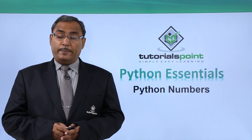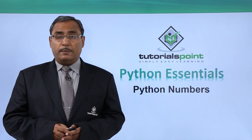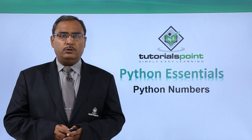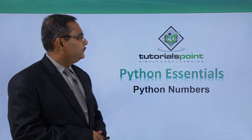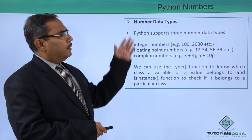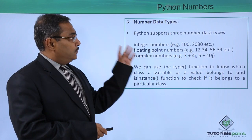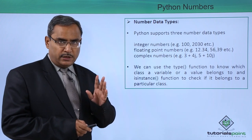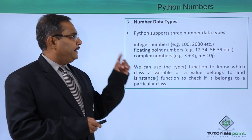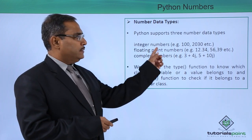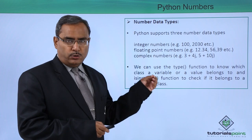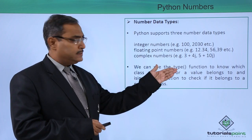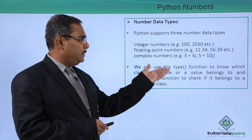Python numbers — we have different types of numbers we can represent in Python. We shall be discussing number data types. Python supports three number data types. The first one is the integer, with integer numbers like 100, 20, 30, something like this as an example.